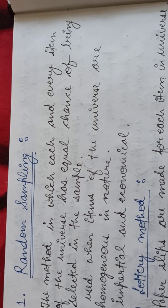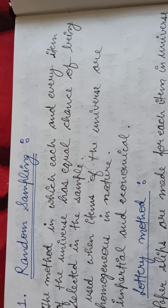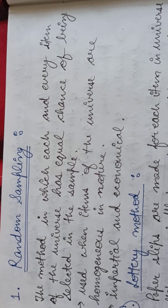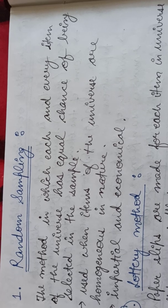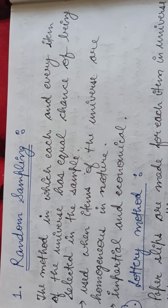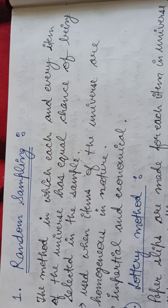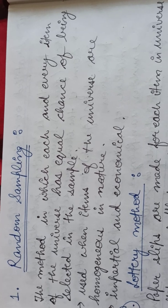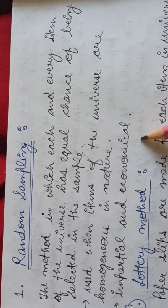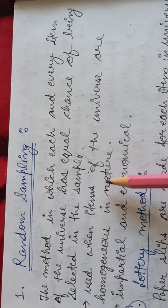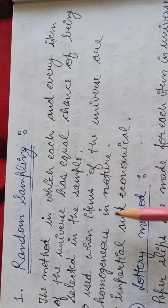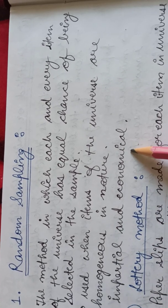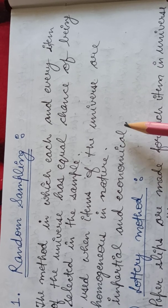Random sampling is used when items of the universe are homogeneous in nature — that is, when the items of a given universe are of similar characteristics. This type of sampling method is more suitable when items are of a homogeneous nature, so it will not create a difference in our study as to which sample has been chosen. This method is impartial and economical in nature, as biasness is not involved and it does not require much time and effort.